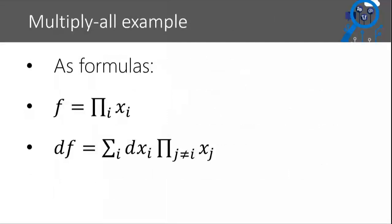To illustrate programs versus formulas: if you think about the formula for multiplying a bunch of numbers, it's fairly compact - you can write it using pi notation or write it as x1 times x2 and so on, linear in the number of variables. But if you take the derivative of that expression, it actually gets a lot more complicated. You can write it compactly, but it's already bigger than the original input. If you actually unrolled it, it would be quadratic in size compared to the input formula. That doesn't happen with programs.